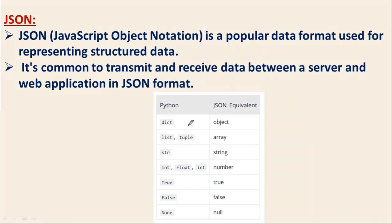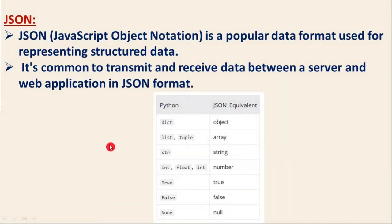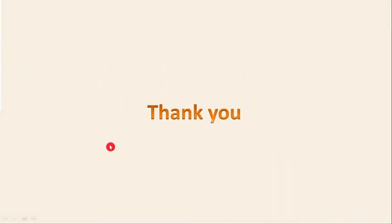The main thing to remember: your JSON data into Python is always a dictionary. If you want to write content into JSON, first write your data in Python as a dictionary, then dump it into JSON and it becomes an object. Simple, right? Thank you for watching this video.